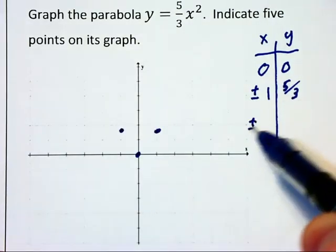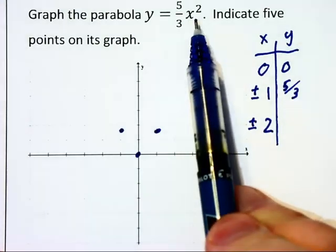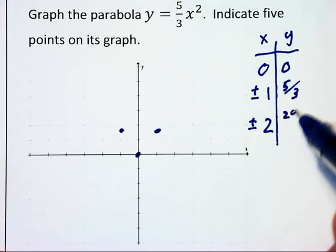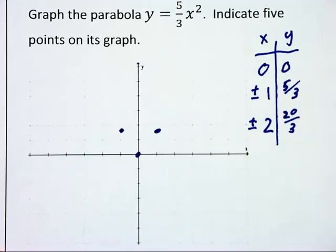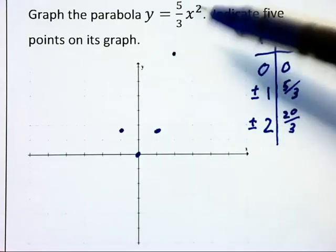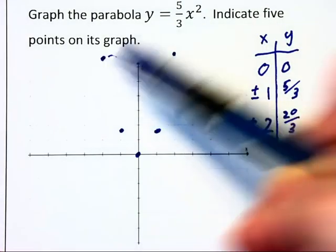If I look at plus and minus 2 which squares to 4. 4 times that 5 thirds is 20 thirds. Now 20 thirds is 6 and 2 thirds.